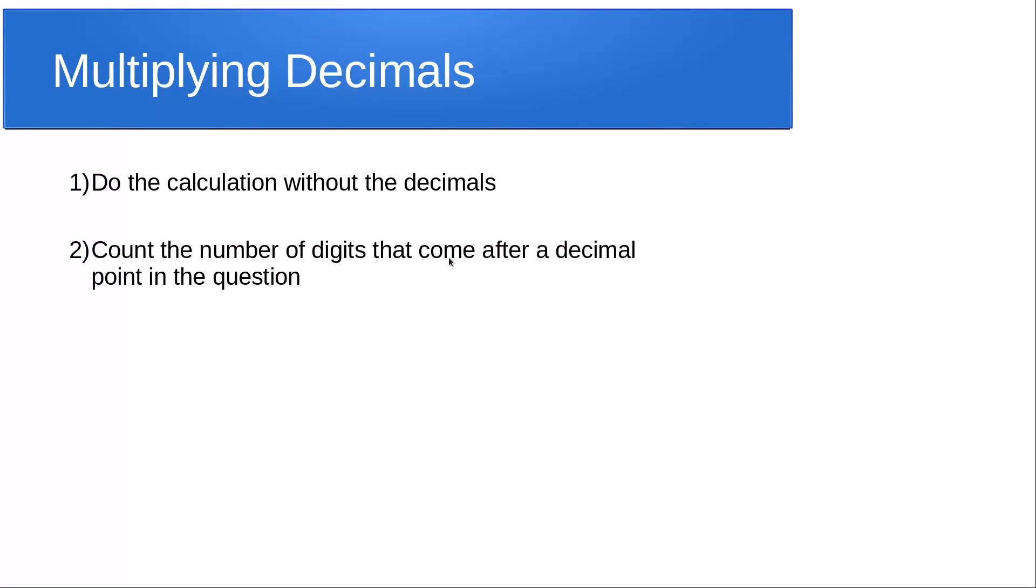Then we count the number of digits that come after a decimal point in the question. You might look at the first number and there might be two digits after the decimal point. In the second number there might be three, making a total of five.